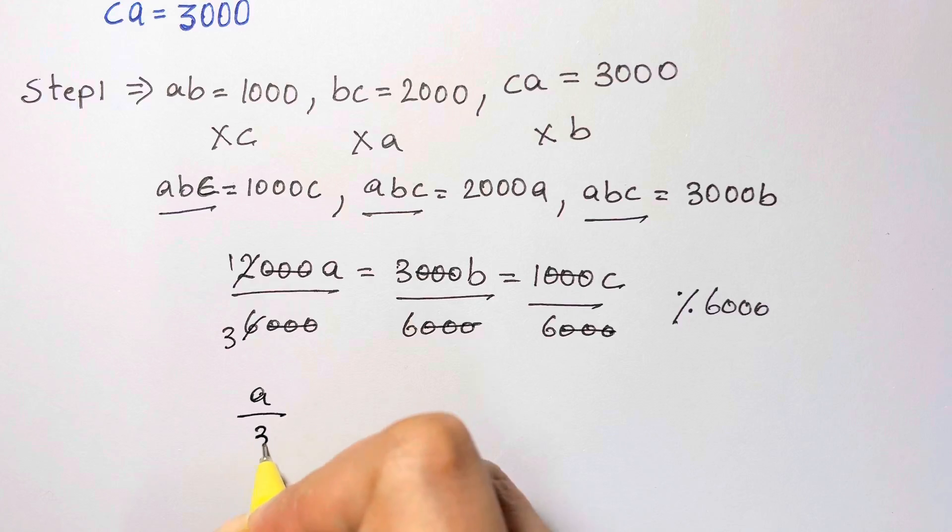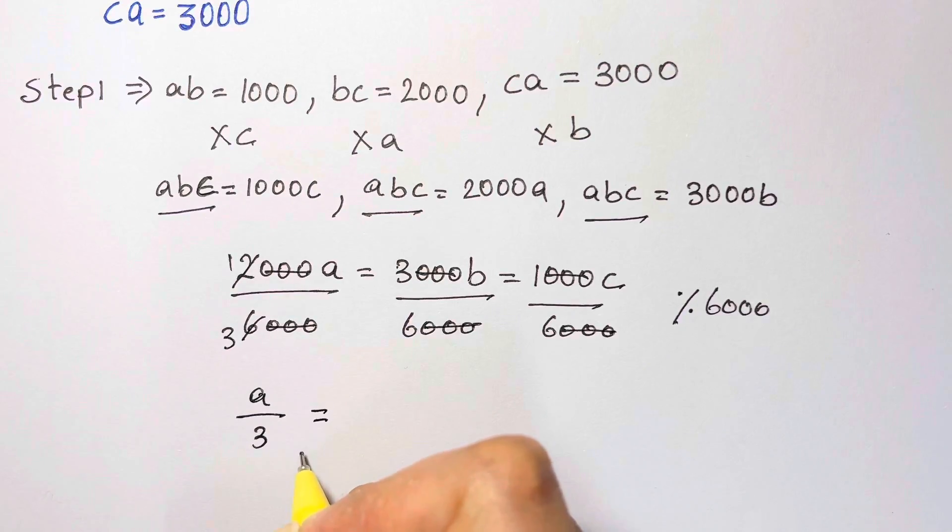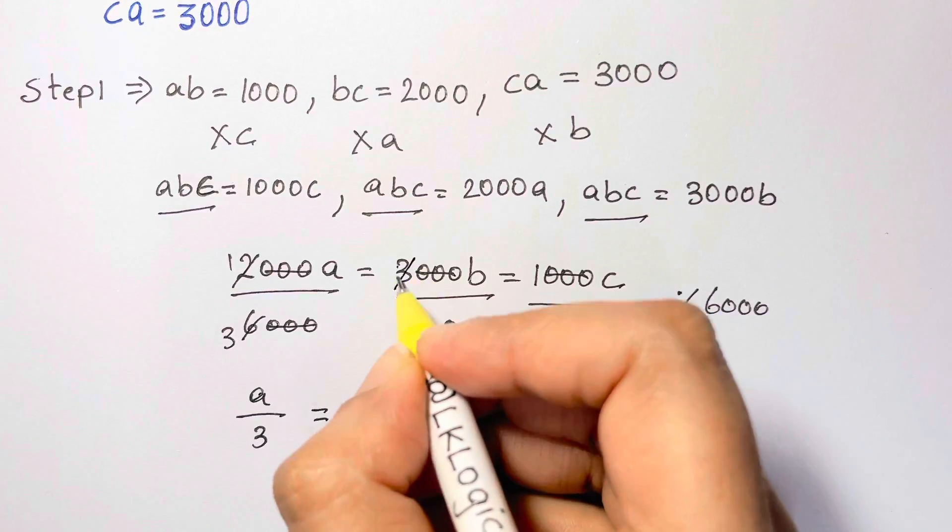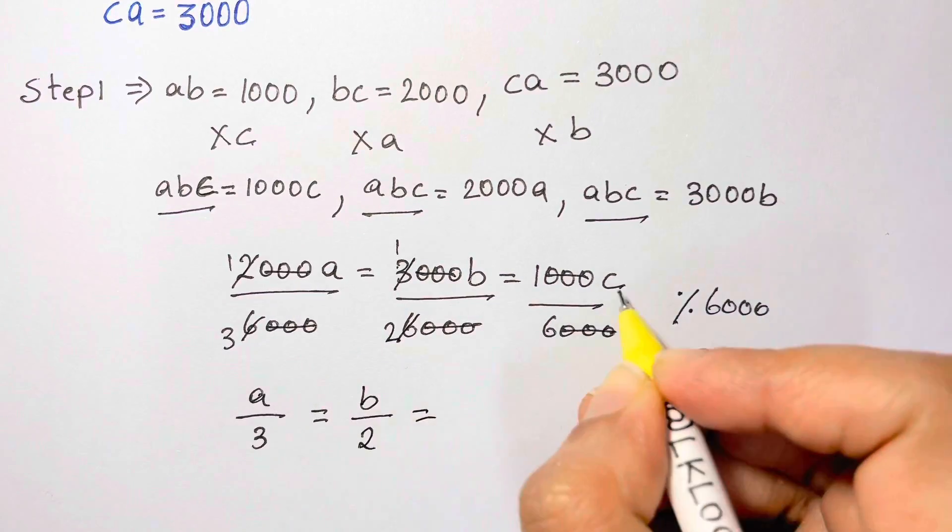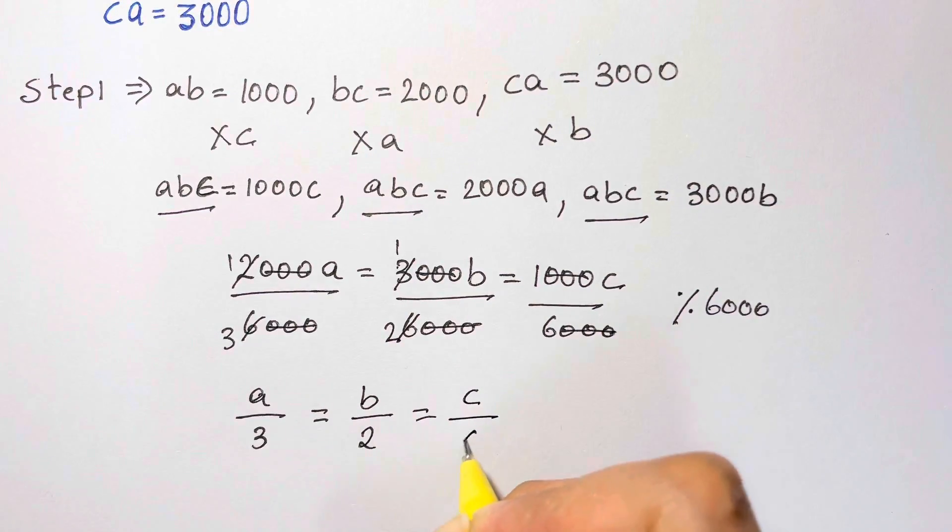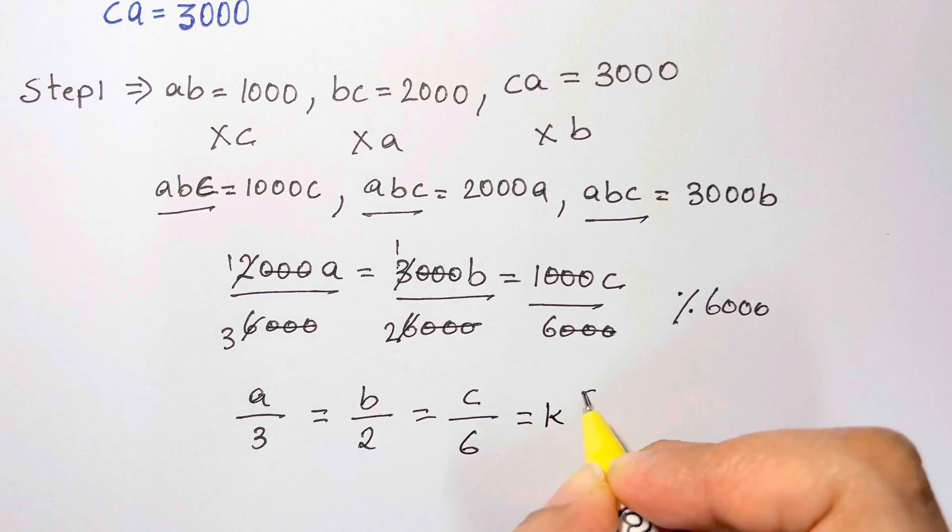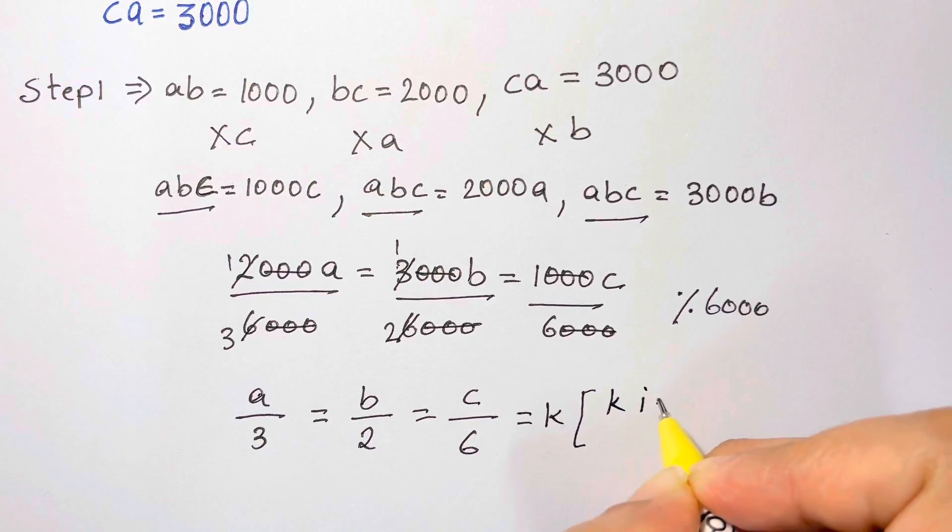So we have a over 3, which is equal to 3 over 6, that is 1 over 2. So that's b over 2 is equal to c over 6, which is equal to k. And k is a constant.